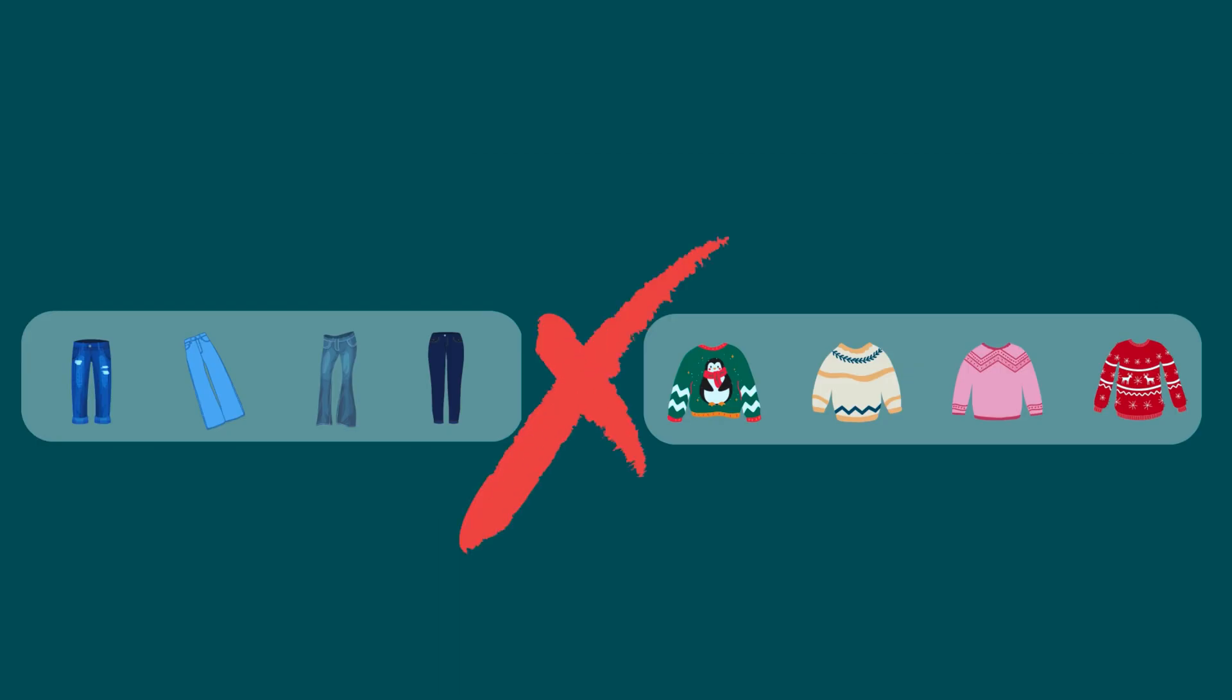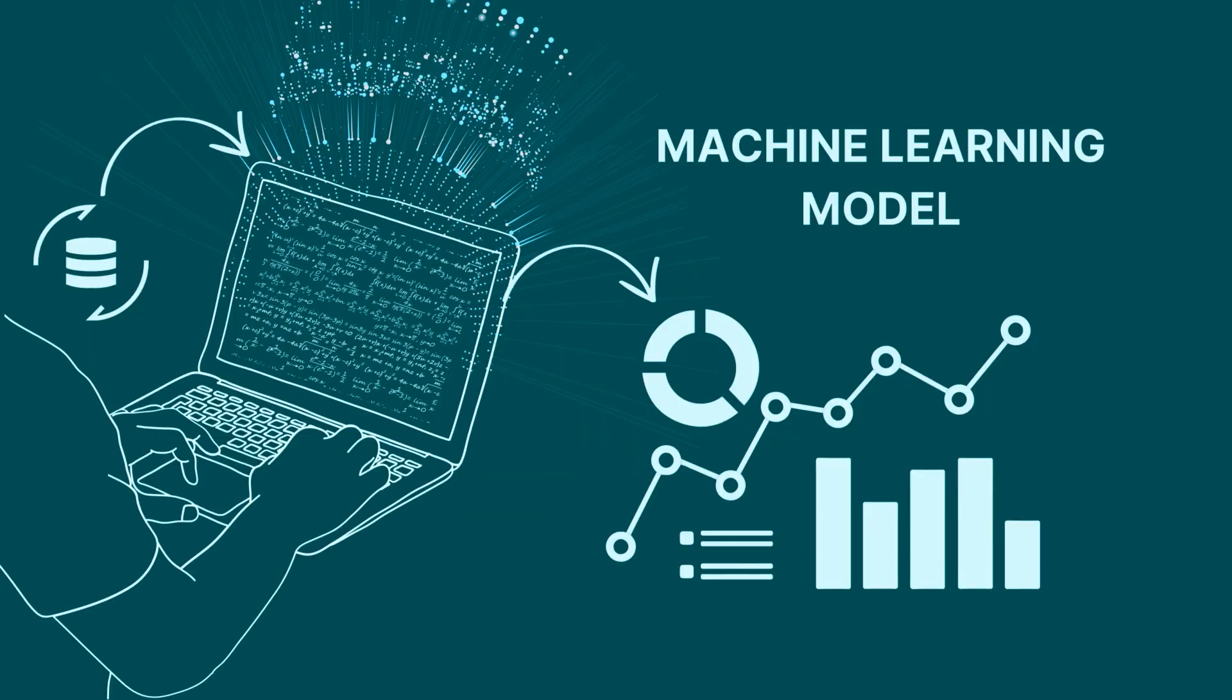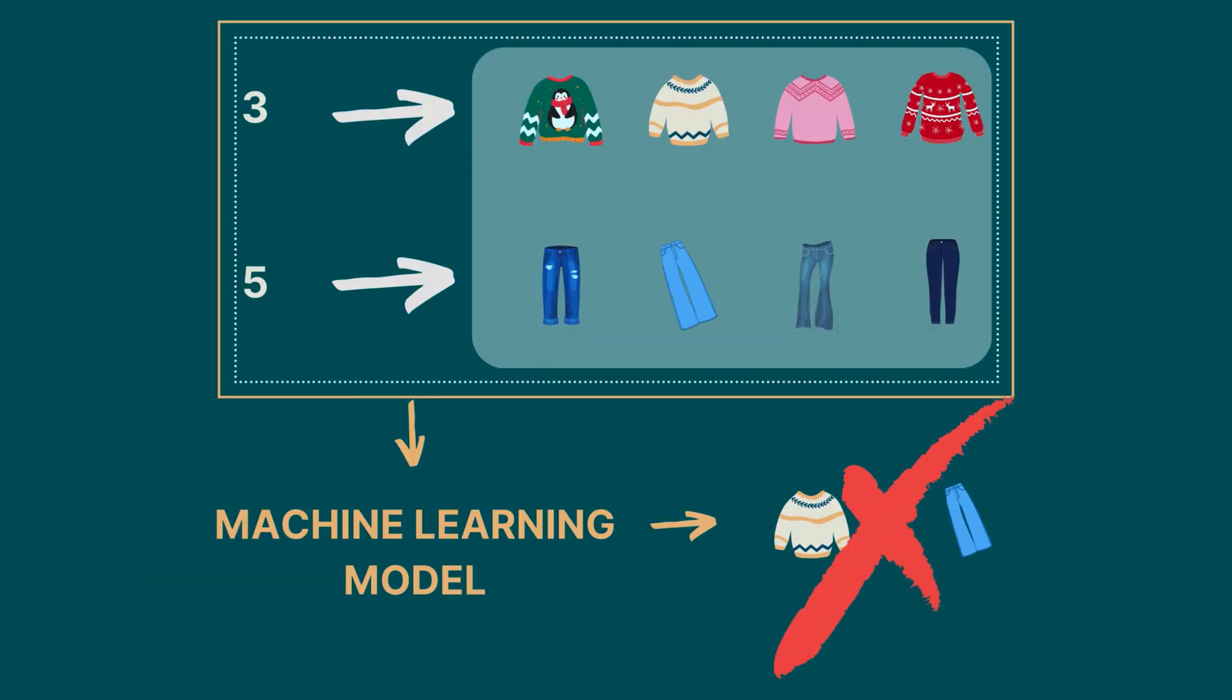Machine learning models make sense of the data that is given to them based on mathematical equations. If we provide categories to a machine learning model in numbers, the model will assume the relationship between these numbers represent the relationship between the categories. And that will not be correct.